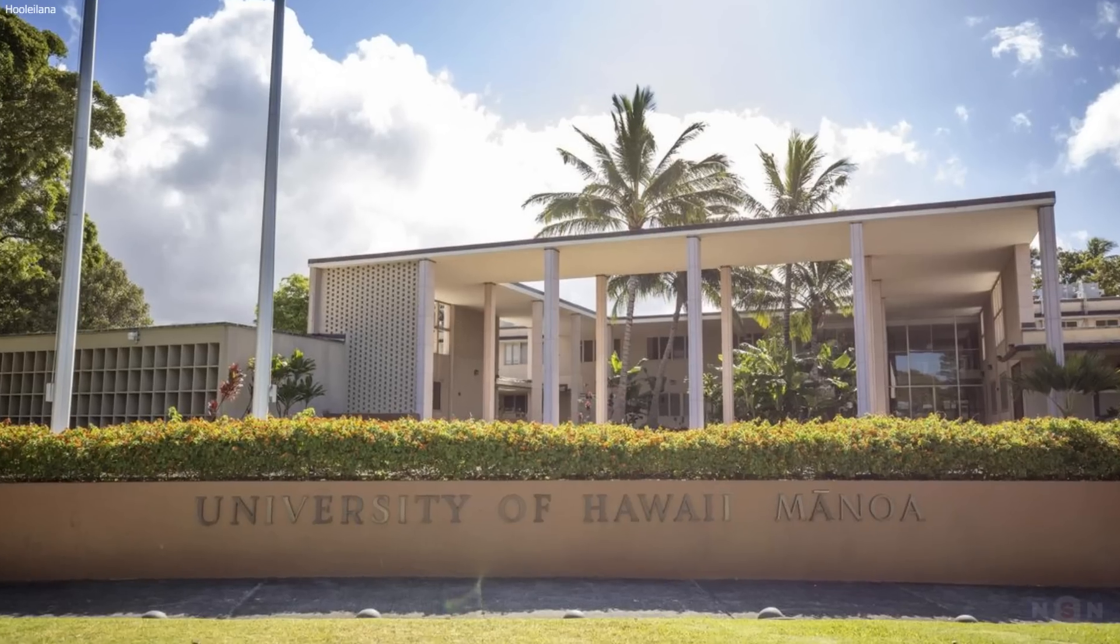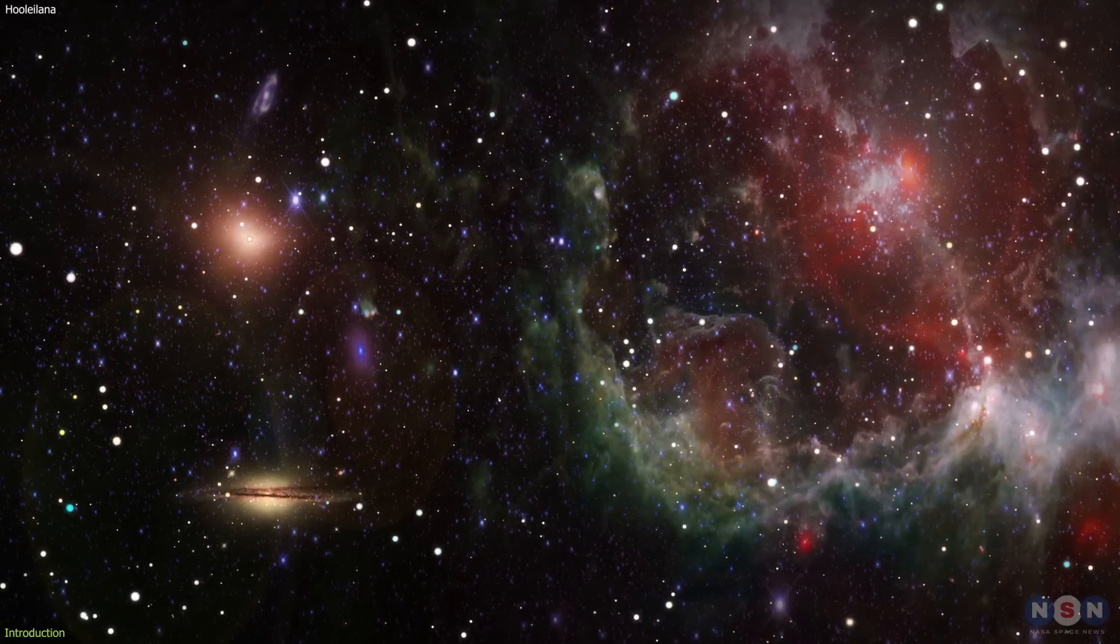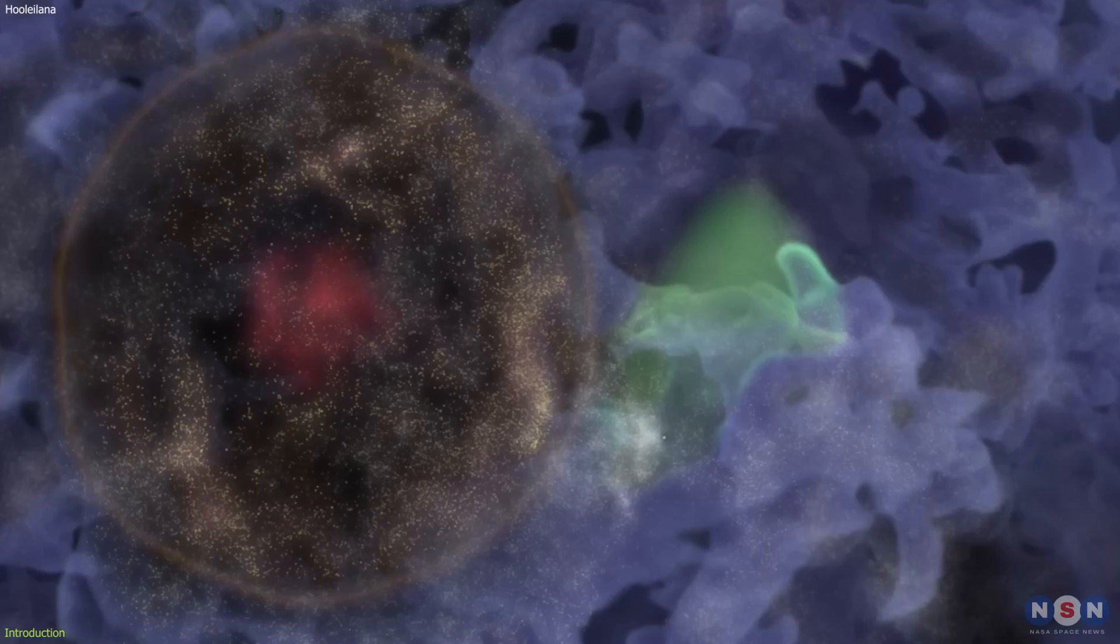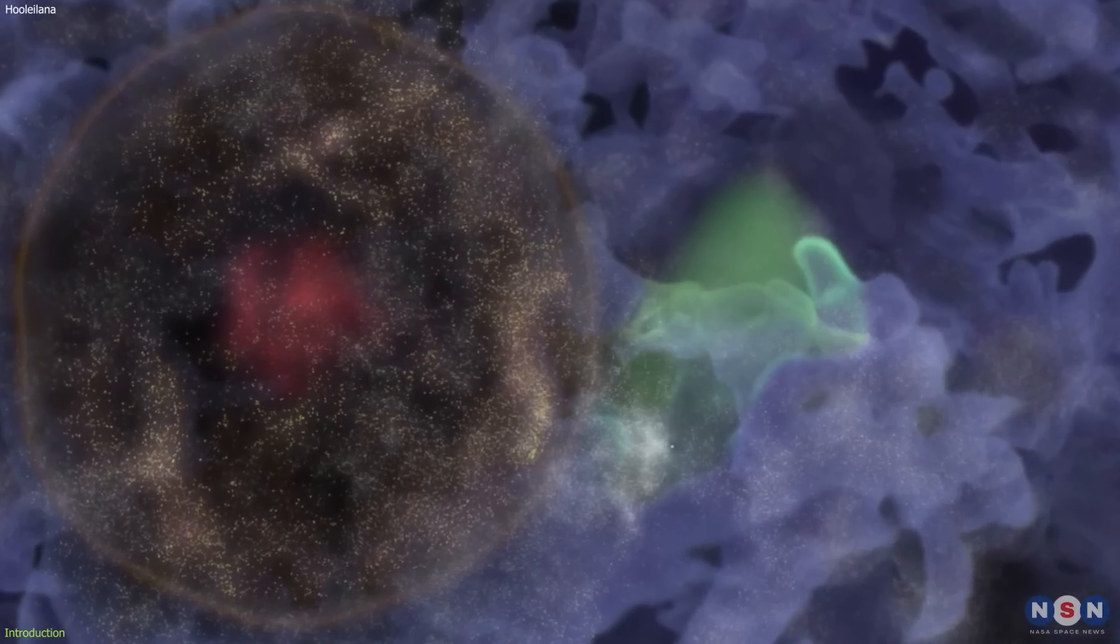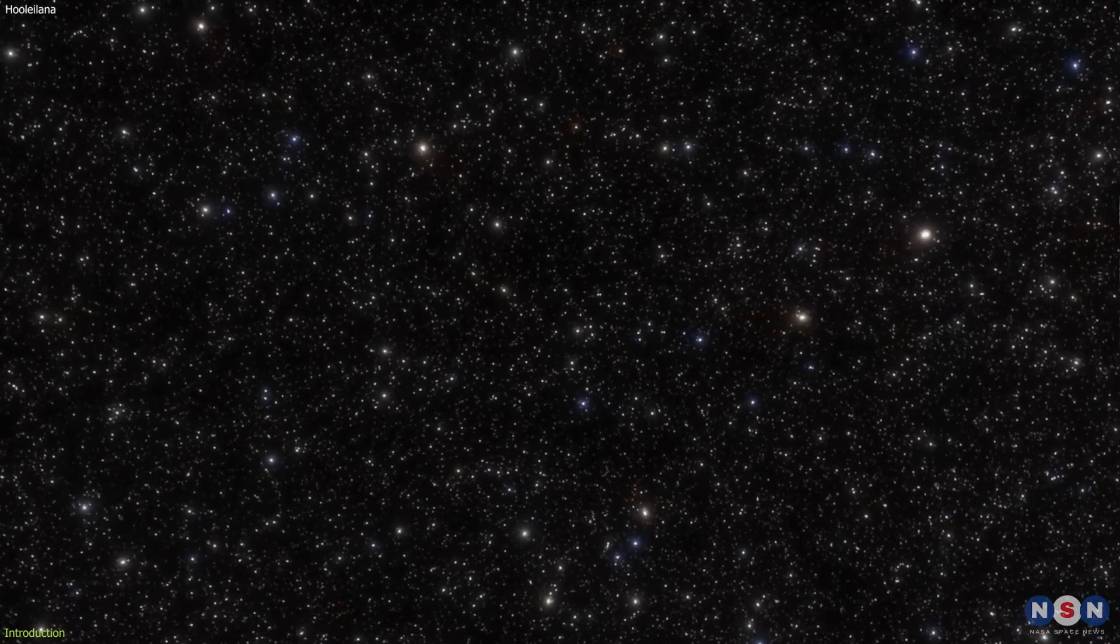A team of astronomers from the University of Hawaii has made a stunning discovery that could change our understanding of the universe. They have found a vast bubble of galaxies that they named Hulelana, which means to make a lei of stars in Hawaiian.